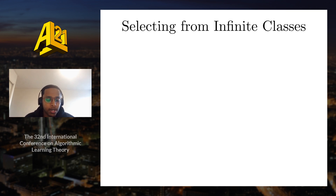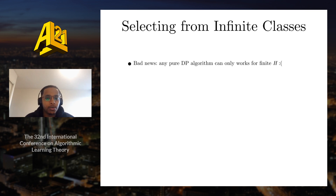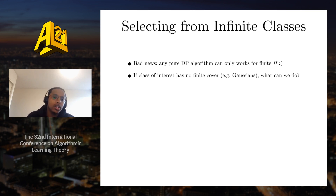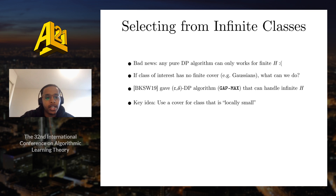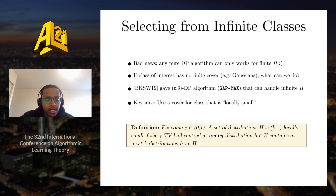The pure differentially private algorithms seen so far work for finite classes. One might wonder what can be done for infinite classes. There is bad news: any pure differentially private algorithm can only work for finite classes. So if the class of interest has no finite covering — like Gaussians — what can we hope to do? BKSW also gave an ε-δ differentially private algorithm called GATMAX that can handle certain infinite classes. The key idea is to use a cover for the class that is locally small. Formally, fixing some γ, a set of distributions H is K-γ locally small if the γ total variation ball centered at every distribution H in the class contains at most K distributions from the set.